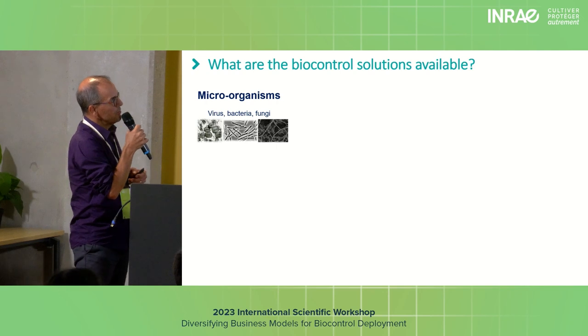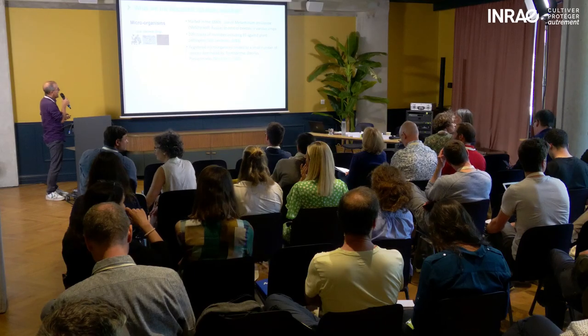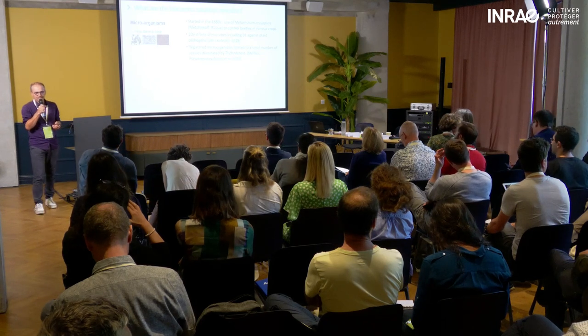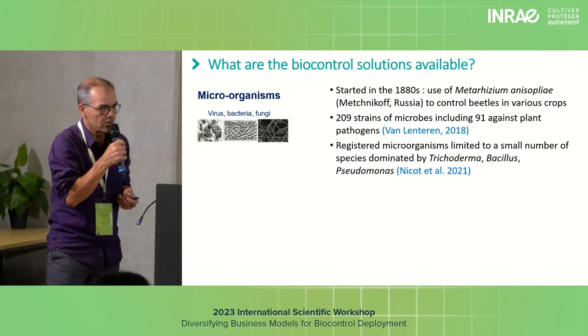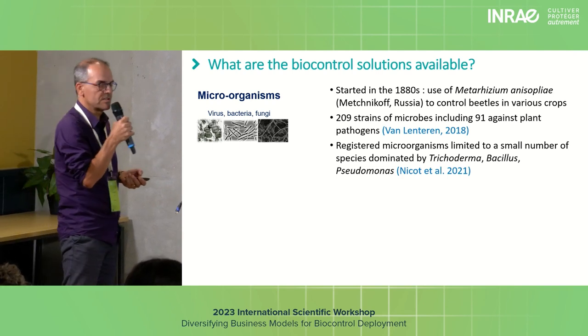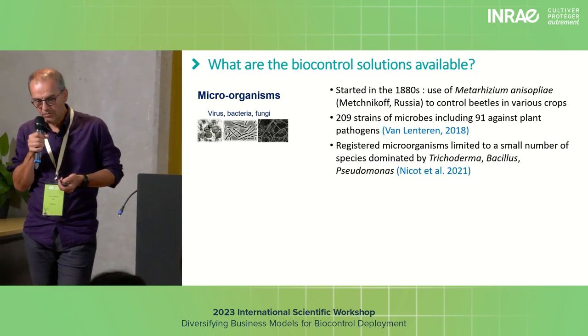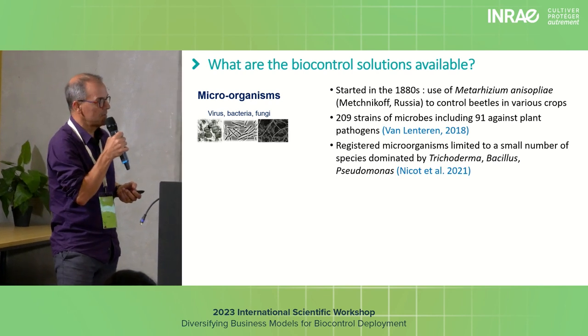Another biocontrol solution available as an augmentative strategy are micro-organisms — viruses, bacteria, fungi, or oomycetes. This strategy started in the late 1800s when Metchnikov, a Russian, used the fungus Metarhizium anisopliae to control beetles in various crops. Now we have almost more than 200 strains of microbes registered throughout the world, including 91 registered against plant pathogens. These are limited to a small number of species dominating the market, such as Trichoderma, Bacillus, and Pseudomonas.